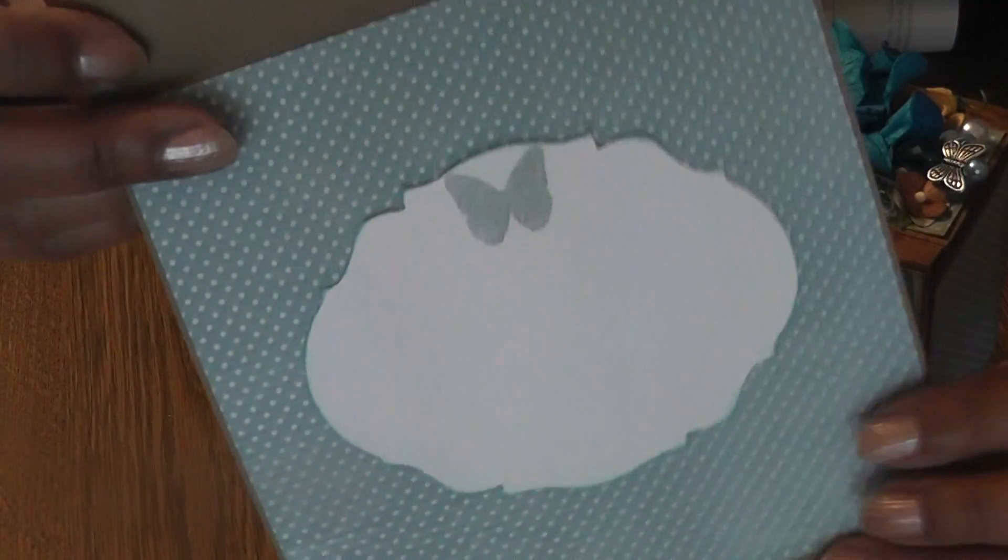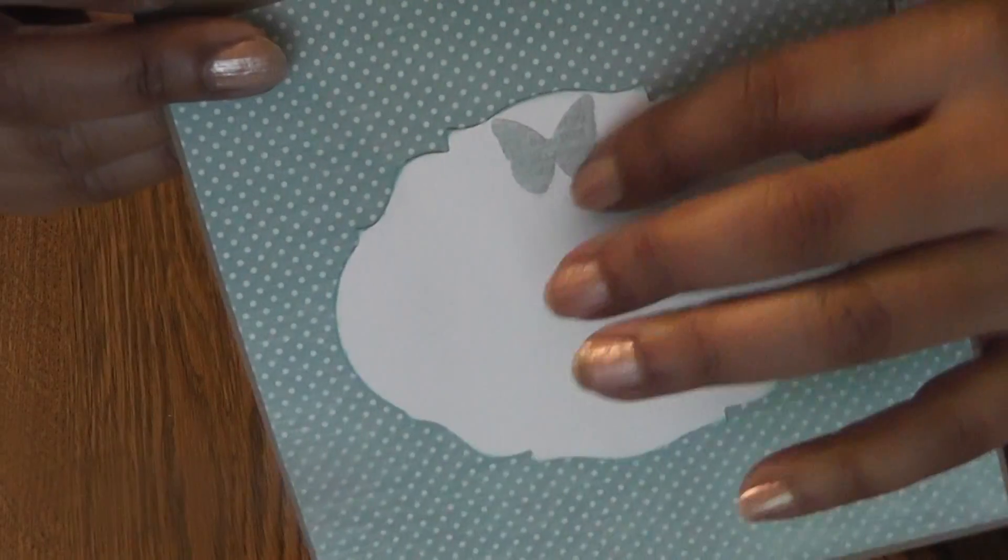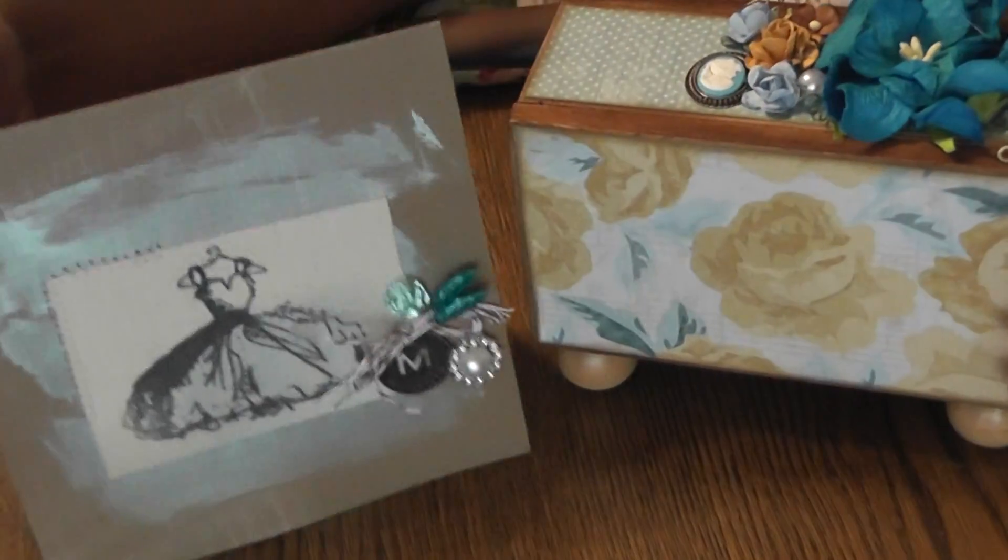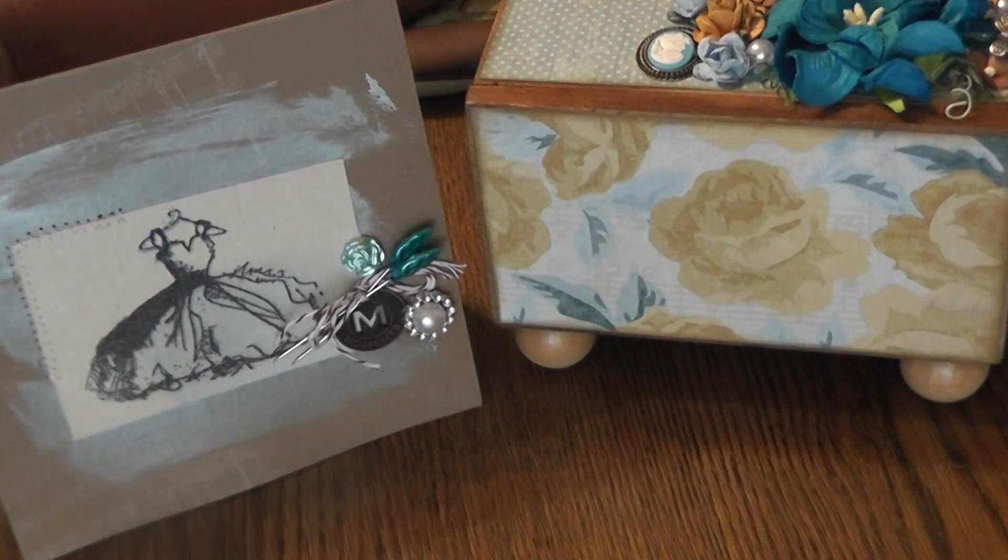So that's the card. I like it. It's different. And then on the inside, I just added some paper, die cuts. I can write a little note. And I marked this with a butterfly. So those are my quick little projects that I did.